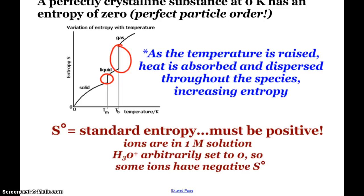And so our entropy, our standard entropy values must be positive. Although you will note that ions on the chart, they are in one molar solution and hydronium has arbitrarily been set to zero. So there are some ions with a negative entropy value. But we had to set one of them equal to zero, and that would be the hydronium, although it could also be listed as the H⁺ ion.